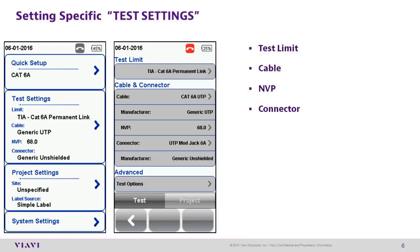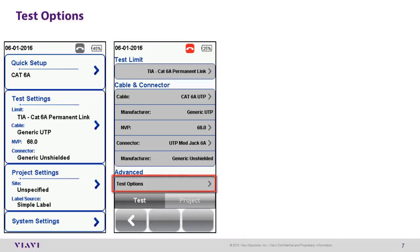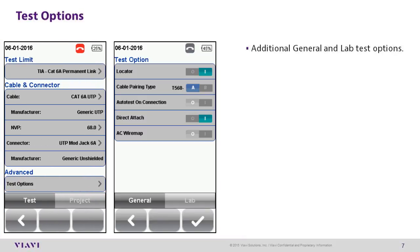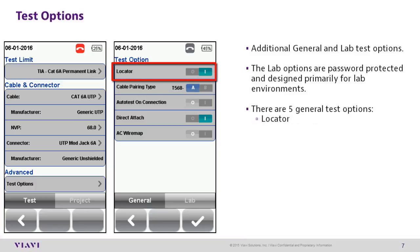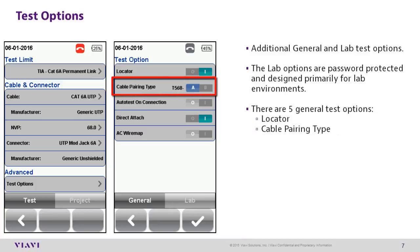Setting the connector is very similar to the cable — select the manufacturer of the specific connector being used or choose a generic option. At the bottom of the Test Settings screen, there is an additional tab for Advanced Testing Options, which provides additional general and lab test options. The lab test options are password protected and are designed primarily for lab test environments. There are five general tests. Locator allows you to turn the fault locator on or off — it is on by default. Cable pairing type can be changed from T568 Alpha to T568 Bravo, which affects the displayed color code only; T568 Bravo is set by default.